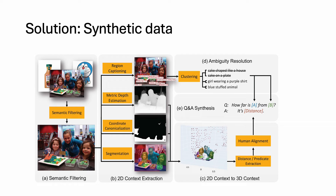The key to Spatial VLM is large-scale synthetic data. We first crawl a dataset of images from the internet before filtering them with CLIP embeddings. By doing such filtering, we can remove images that are not rich in spatial relationships, such as product photos of single objects. We then feed these images into existing expert models to extract information like segmentation, metric depth, and object-centric captions.